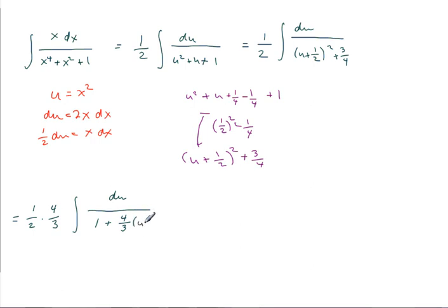u plus 1 half squared. And let me bring that 4 thirds into the square root. So, I'm going to get 2 thirds. I'm simplifying that constant. Integral of du over 1 plus 2 over the square root of 3 times u plus 1 half squared.